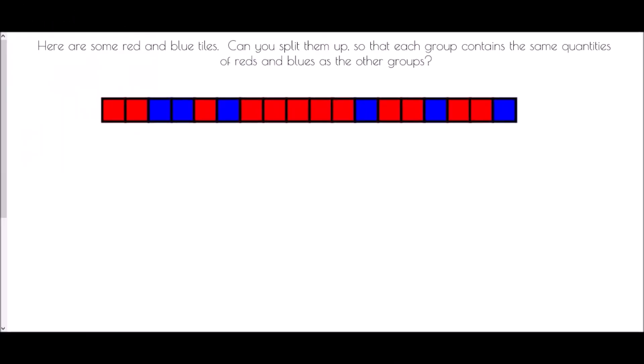Okay, so here are some red and blue tiles. Can you split them up so that each group contains the same quantities of reds and blues as the other groups? Let's start with how many of each there actually are. We can see that currently there are twelve red ones.